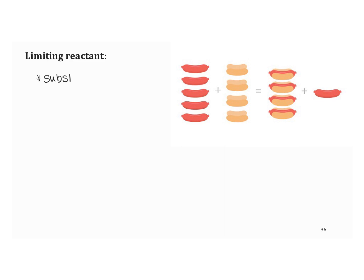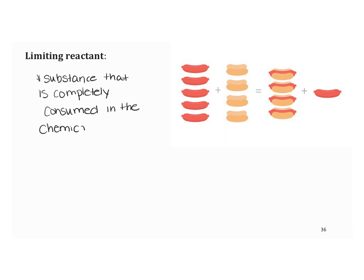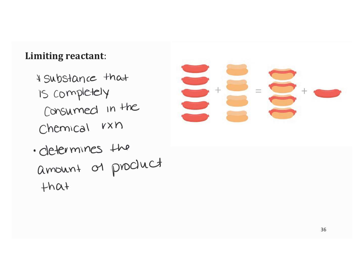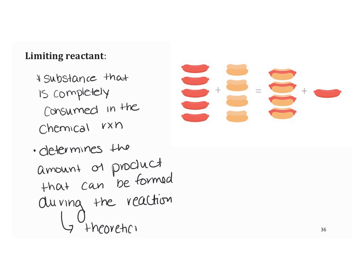The limiting reagent is a substance that is completely consumed in the chemical reaction. This determines the amount of product that can be formed during the reaction. The amount that can be formed is called the theoretical yield, or the max amount.